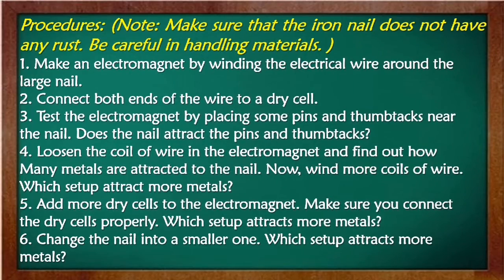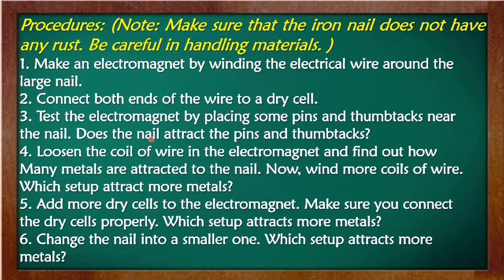Here are the procedures. Please note that the iron nail should not have any rust — be careful in handling materials. You may use a new iron nail so that it will not have any rust. Number 1: Make an electromagnet by winding the electrical wire around the large nail. Connect both ends of the wire to a dry cell. Test the electromagnet by placing some pins and thumbtacks near the nail. Does the nail attract the pins and thumbtacks?